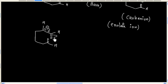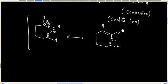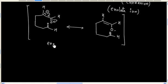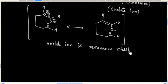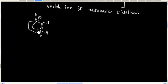So we can write another resonating structure of the enolate ion. Enolate ion is resonance stabilized. Now in the next step we will have nucleophilic attack by the carbanion on the other aldehyde group.